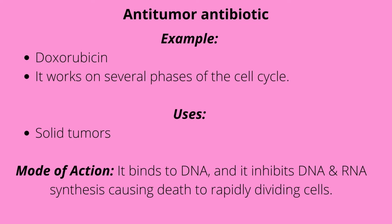Antitumor antibiotics — the common one you'll see is doxorubicin. Doxorubicin works in various phases of the cell cycle. Because it works on multiple phases, this tells you the drug is very toxic to the body. It's used for solid tumors. Its mode of action: it binds to the DNA and inhibits DNA and RNA synthesis, causing death to rapidly dividing cells.